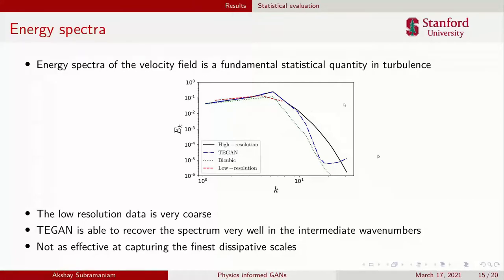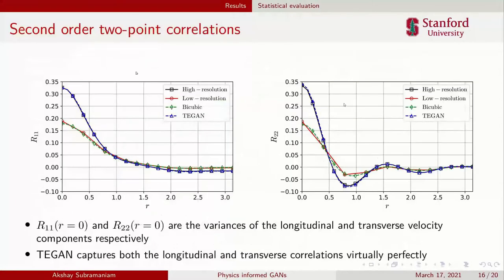We also look at second-order two-point correlations. This is essentially another metric that shows the energy distribution as a function of physical scale. If you look at the bicubic interpolation, you see it's just interpolating the low-resolution statistics. But the TE-GAN is really able to recover the high-resolution fields, and what this means is that the TE-GAN model is able to recover the energy of the system pretty accurately.